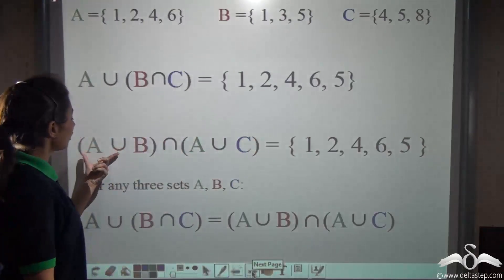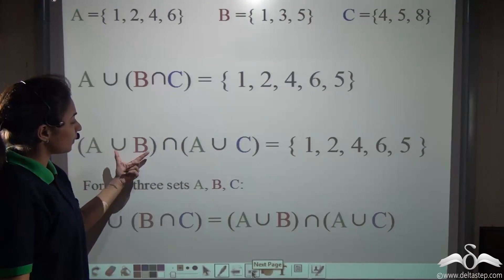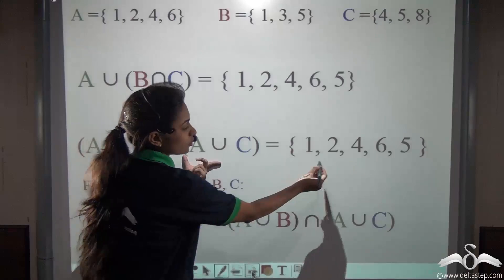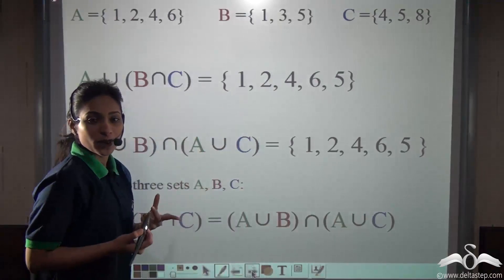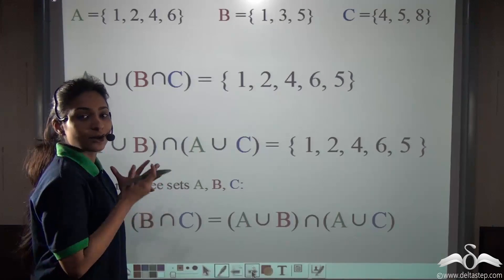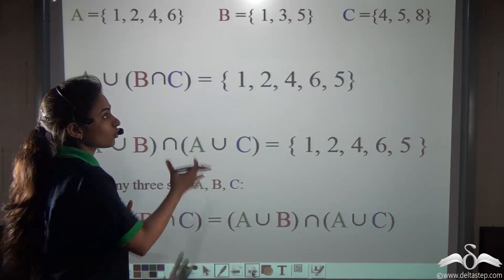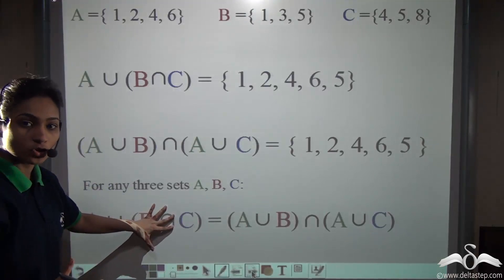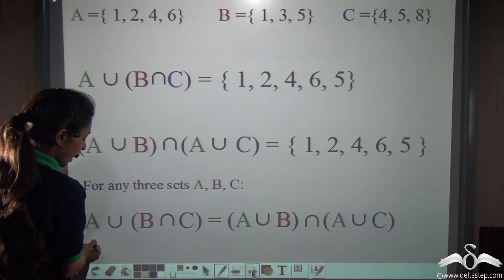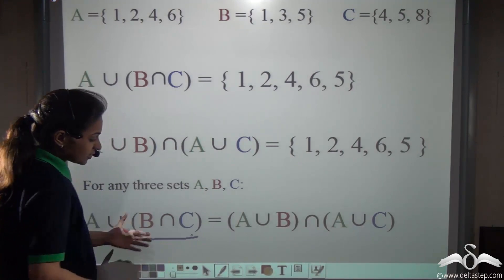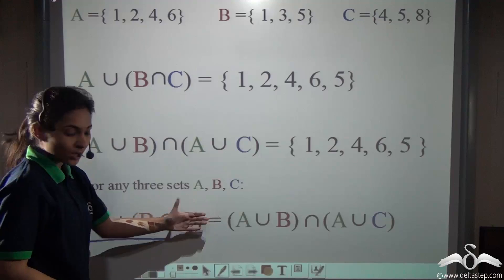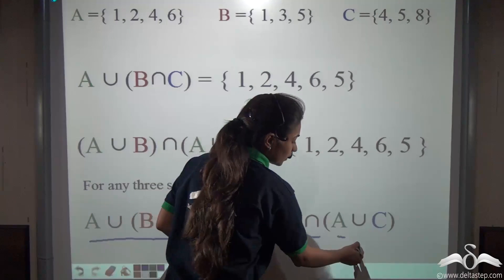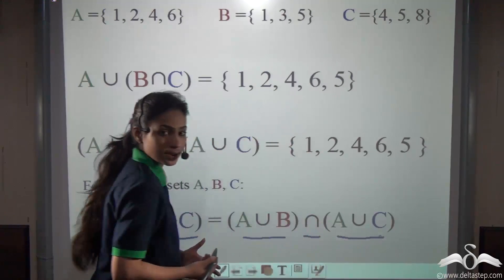Similarly, we got (A union B) intersection (A union C) as 1, 2, 4, 6 and 5. So we saw, both from the Venn diagram and from this sum, that the relationship holds true: A union (B intersection C) is equal to (A union B) intersection (A union C).